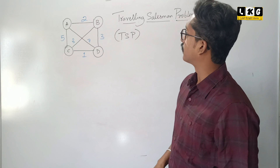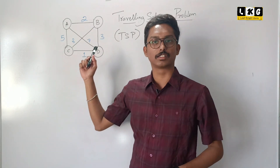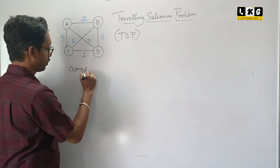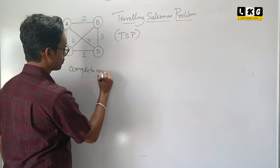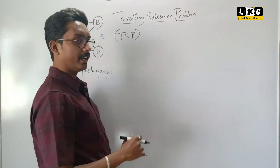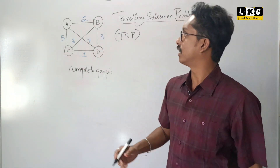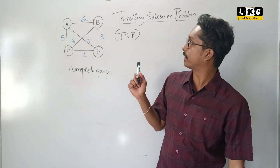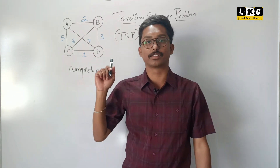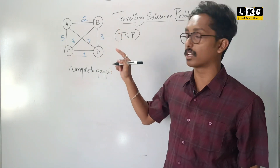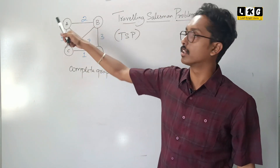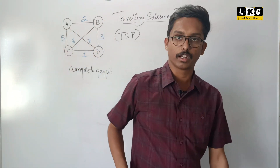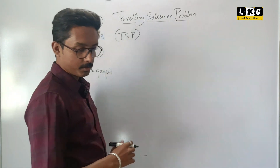First, let us look at this graph. What type of graph is this? This is a complete graph. Why we say it as a complete graph? Because every node has a direct route to every other node. It is not a directed graph; it is an undirected graph because there is no particular direction. So we can move both ways — from A to B as well as from B to A. This is a complete graph and this is a traveling salesman problem.